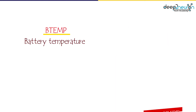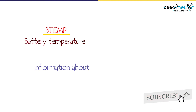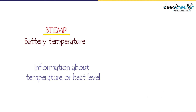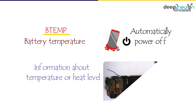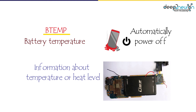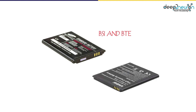B-TEMP stands for Battery Temperature. B-TEMP works similarly to BSI, but it only sends information about the temperature or heat level of the battery. Sometimes our mobile phone becomes very hot and powers off automatically. B-TEMP alerts the mobile if there is high heat or voltage in the battery, causing the phone to automatically power off.